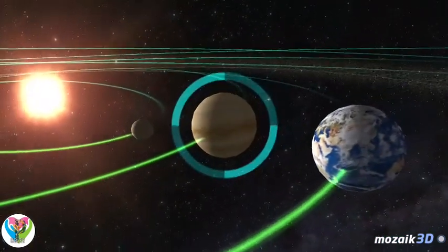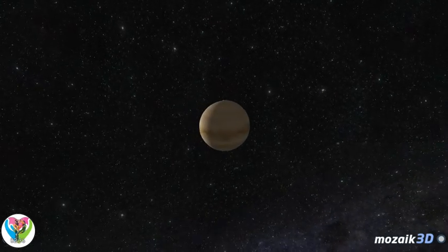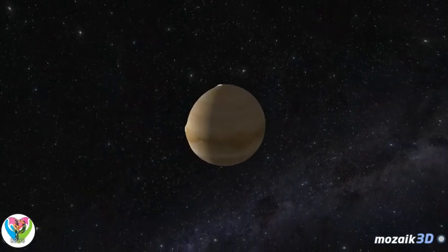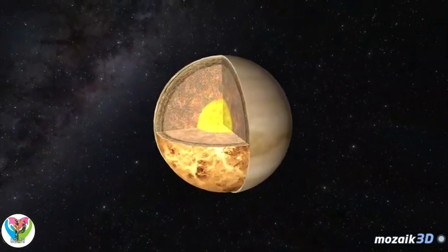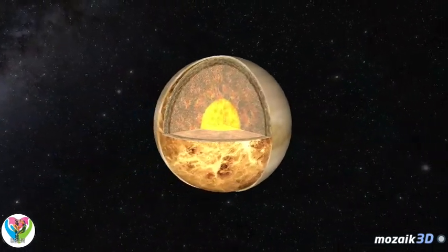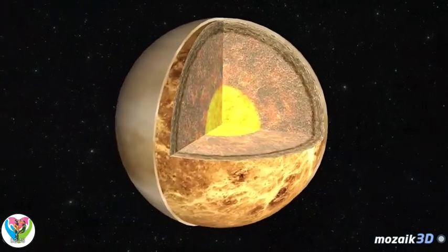Venus is the second closest inner planet to the Sun. It is a rocky terrestrial planet with great density, 5.25 grams per cubic centimeter. It is very similar to the Earth in size and mass, and it is therefore often called the Earth's sister planet.